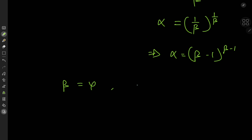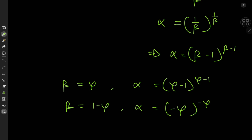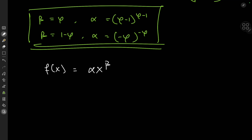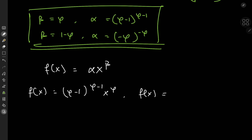For β = φ, we get α = (φ−1)^(φ−1). For β = 1−φ, we get α = (−φ)^(−φ), which is a complex number since it's a negative number raised to an irrational exponent. So the two solutions to the differential equation are: f(x) = (φ−1)^(φ−1)·x^φ, and f(x) = (−φ)^(−φ)·x^(1−φ).